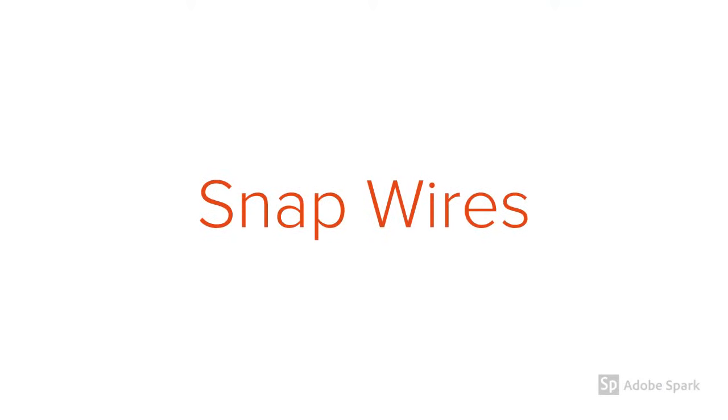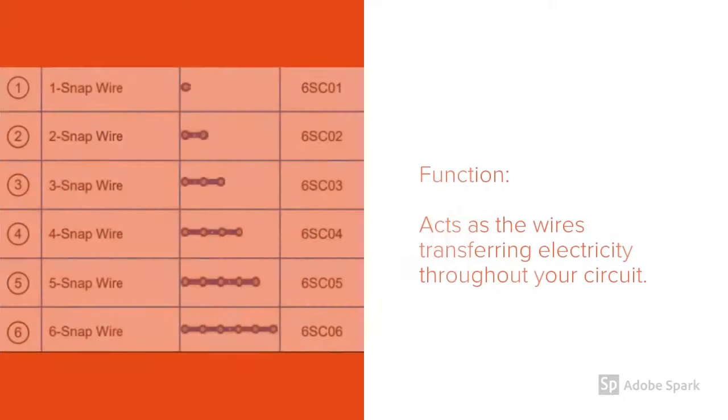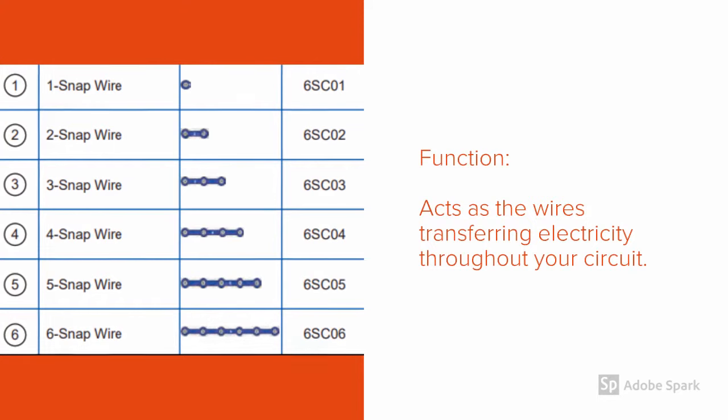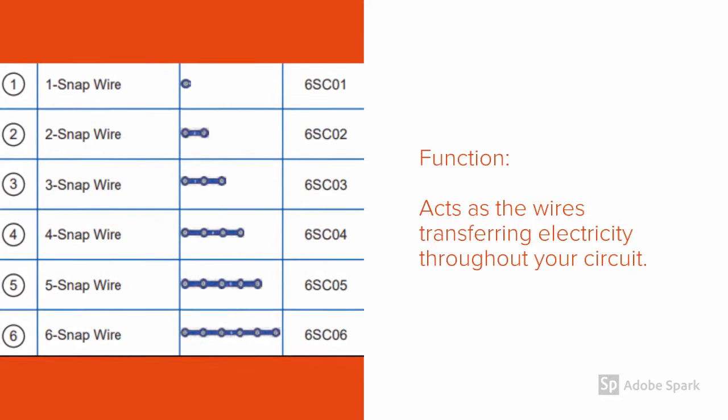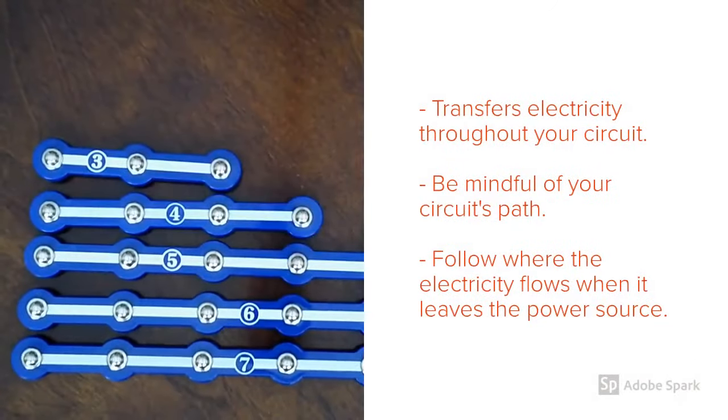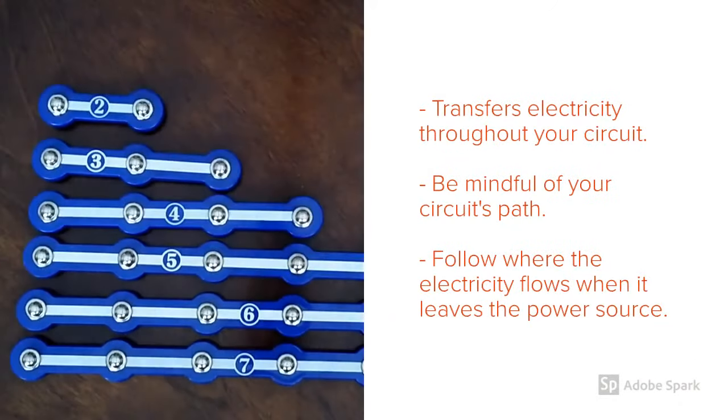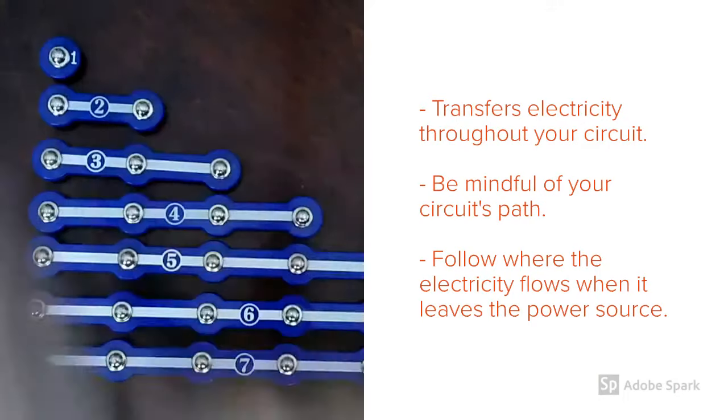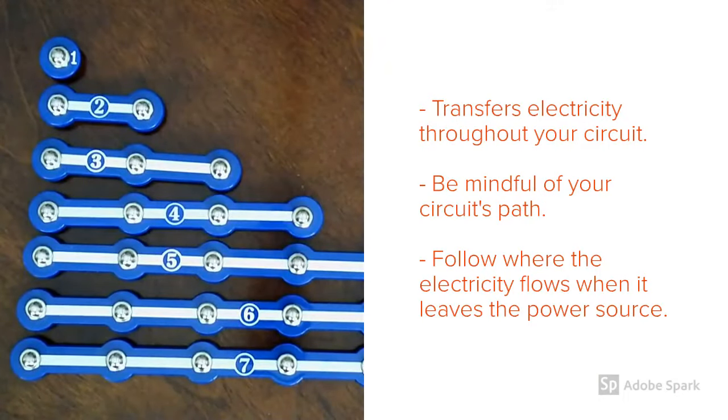Up next we have Snap Wires. Snap Wires are used to transfer electricity from one point to another within your circuit. When using Snap Wires, you'll be creating a path for electricity to flow throughout your circuit. It's important that you're mindful of the path you're creating using these components, so be sure to always follow where the electricity flows when it leaves the power source.